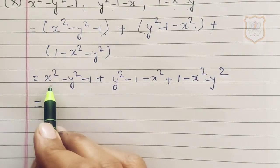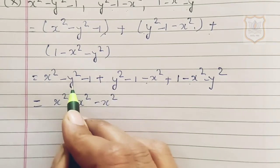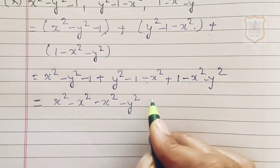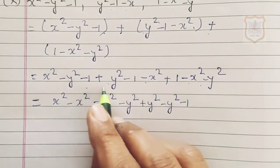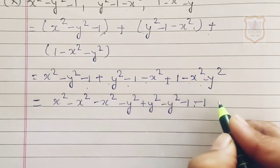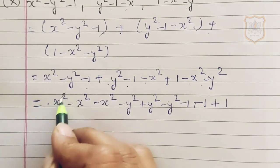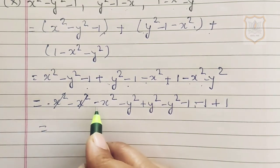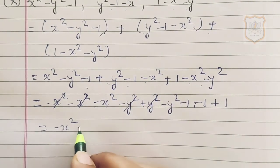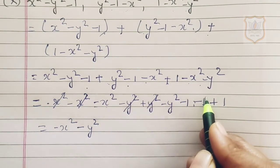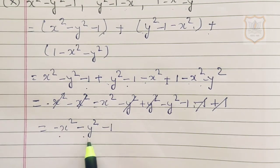Arranging like terms: positive x² and negative x² cancel. Positive y² and negative y² cancel. Positive 1 and negative 1 cancel. The remaining terms give minus x² minus y² minus 1. So the answer is minus x² minus y² minus 1.